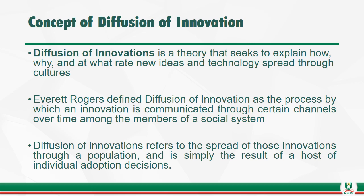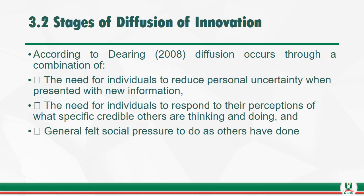According to Dairy (2008), diffusion occurs through a combination of factors. These include: first, the need for individuals to reduce personal uncertainty when presented with new information — they should be open-hearted when confronted with new information; second, the need for individuals to respond to their perceptions of what specific credible others are thinking and doing; and third, general felt social pressures to do as others have done.